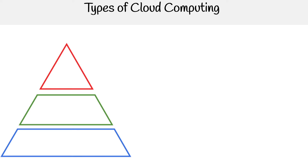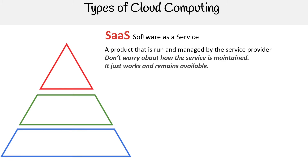The one at the top is called Software as a Service, also known as SaaS. It is a product that is run and managed by the cloud service provider. You don't worry about how the service is maintained — it just works and remains available. The keyword here is software.